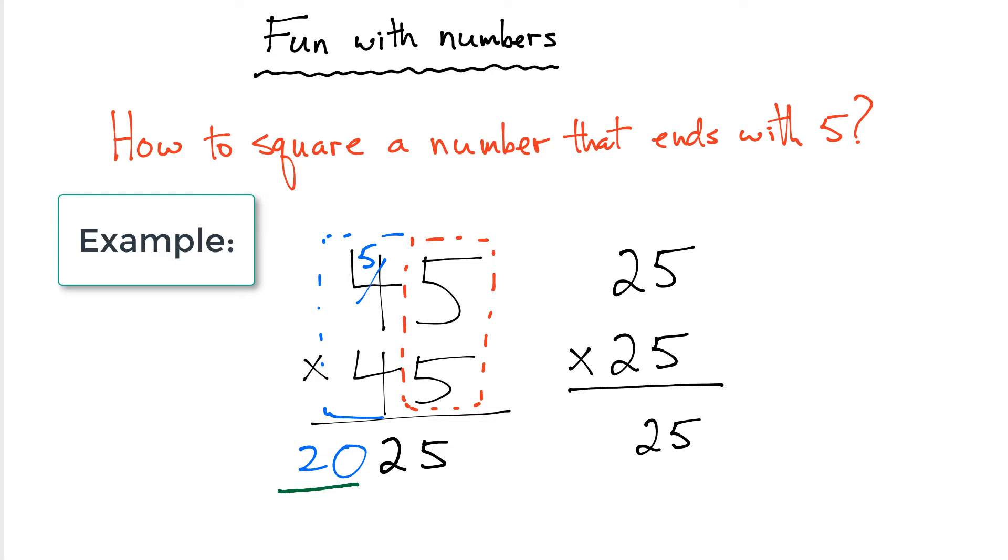And instead of multiplying 2 times 2, what you do is you simply add 1 to the top number and you multiply 2 times 3. The answer is 625.